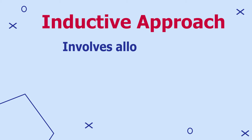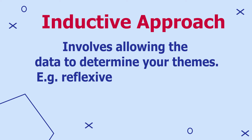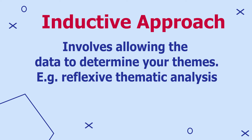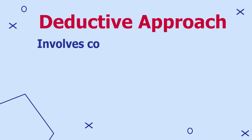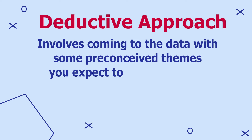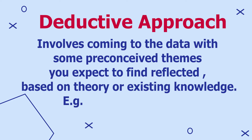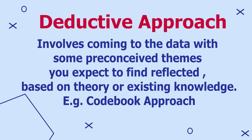Before we understand the difference between codes and themes, it's important to understand the two main approaches to thematic analysis. The first is an inductive approach that involves allowing the data to determine your themes — an example of a majorly inductive approach is the reflexive thematic analysis approach. The second approach is the deductive approach, which involves coming to the data with some preconceived themes you expect to find reflected, which might be based on theory or existing knowledge. An example of a majorly deductive approach is the codebook approach.